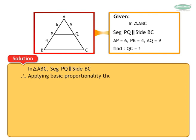Applying basic proportionality theorem, we get AP upon PB is equal to AQ upon QC.